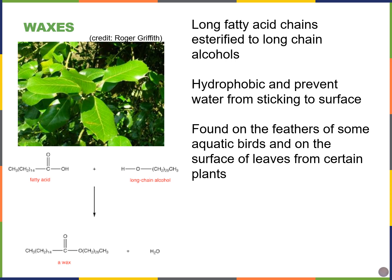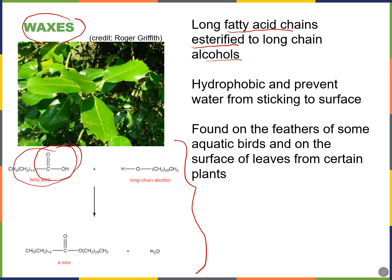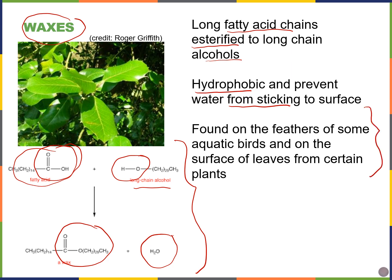Our next type of lipid are waxes. Waxes are made of long fatty acid chains that bond to long-chain alcohols through ester linkages — a dehydration synthesis reaction where water comes out. Waxes, like other lipids, are water-repelling and good at making something waterproof. We find them on the feathers of some birds, on the surface of leaves from certain plants, and even on the surface of some bacteria, making them sticky and hard for the immune system to break down.